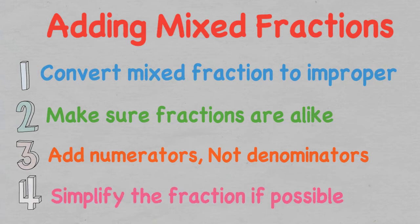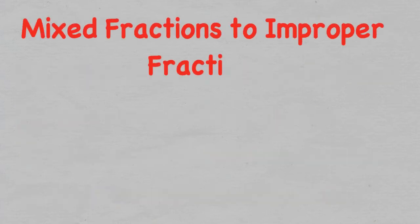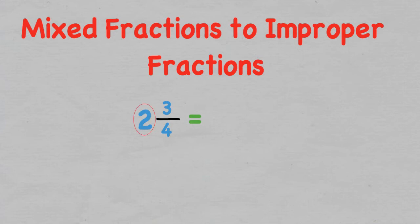Let's quickly look at how we can change a mixed fraction into an improper fraction. For example, we have 2 and 3 over 4. To change this mixed fraction, we need to multiply the whole number by the denominator and add the numerator. This leaves us with 11 over 4.